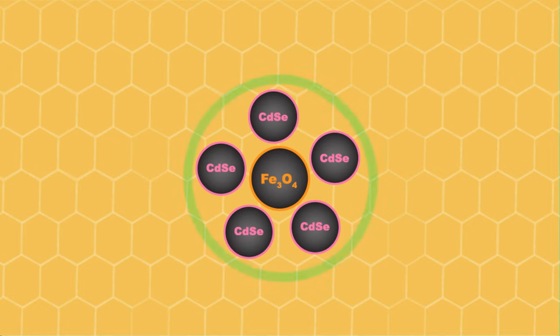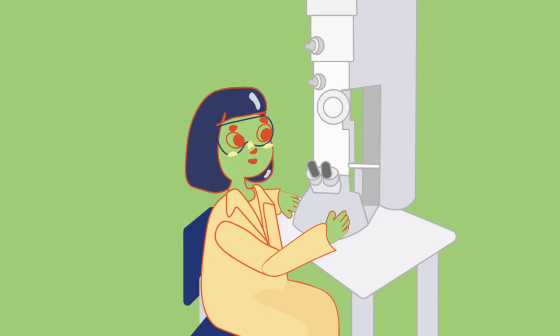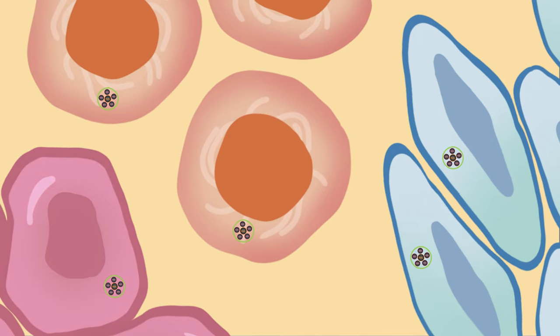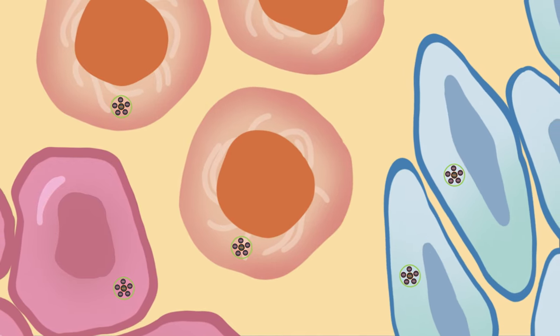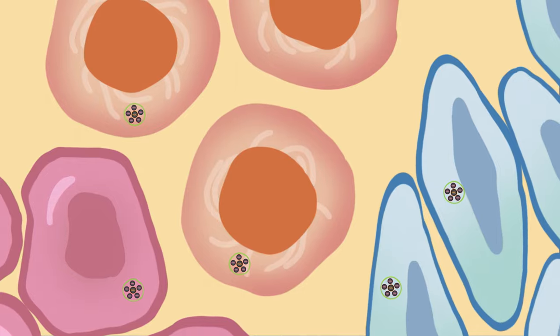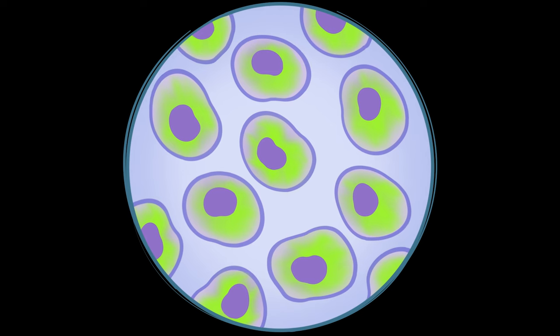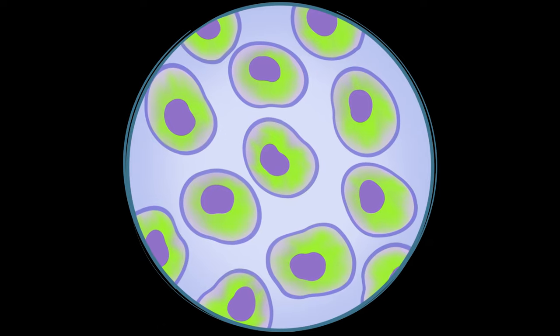The scientists discovered they were able to magnetically manipulate the resulting superstructure in living cells due to the magnetic properties of iron oxide and track it using the fluorescent properties of quantum dots.